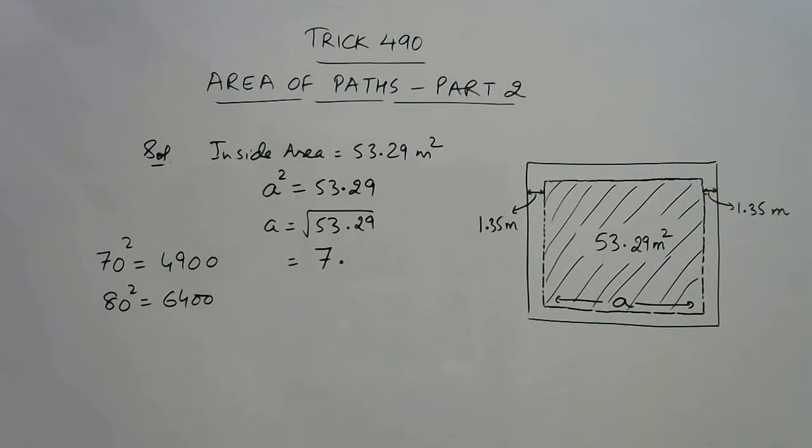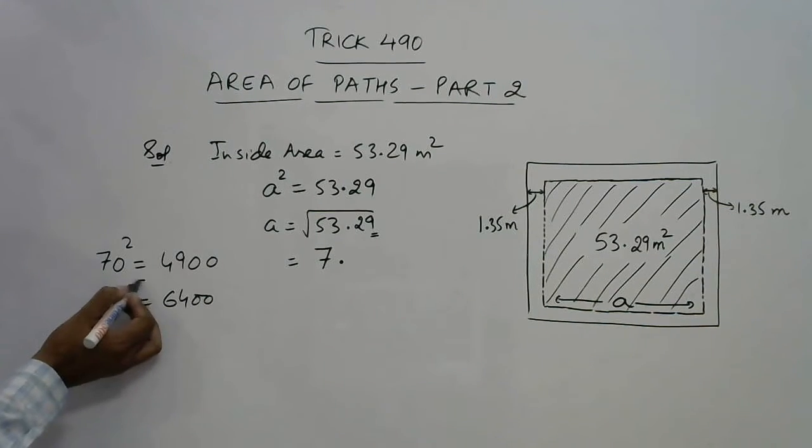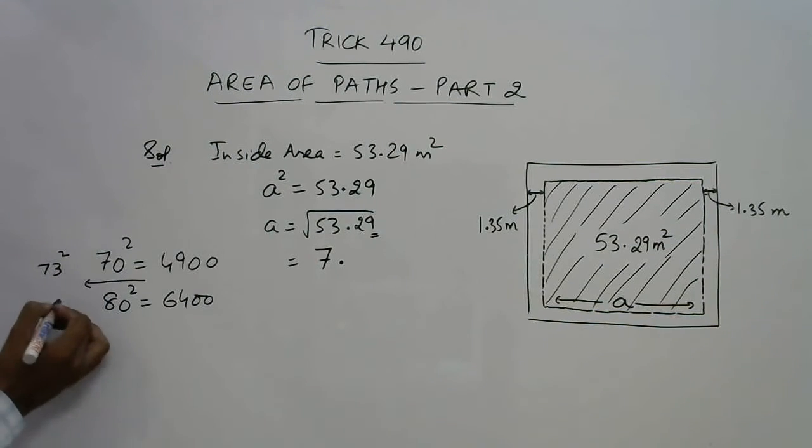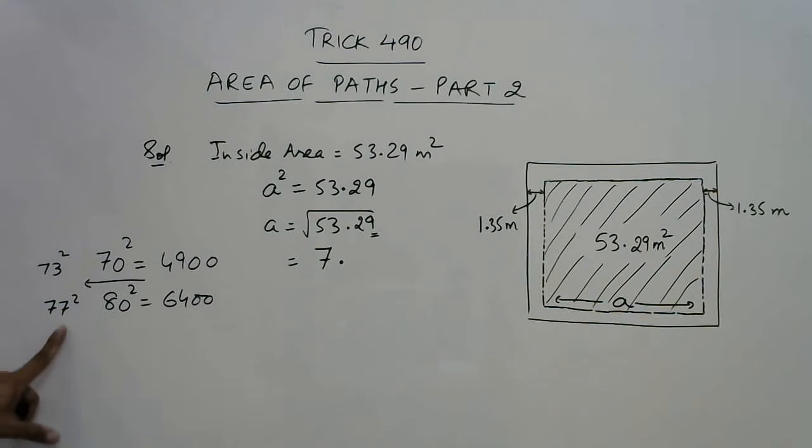Now 7 point how much? See the unit digit - this is 9. So either it is 7.3 because 3 square is 9, or it is 7.7 because 7 square is 49 in which the unit digit is again 9. So now we need to choose either 7.3 or 7.7.